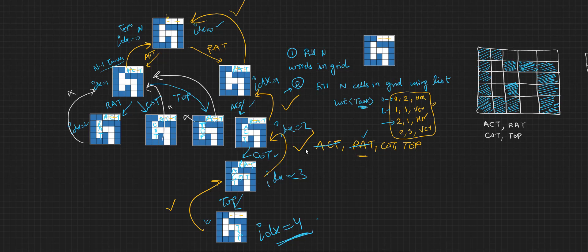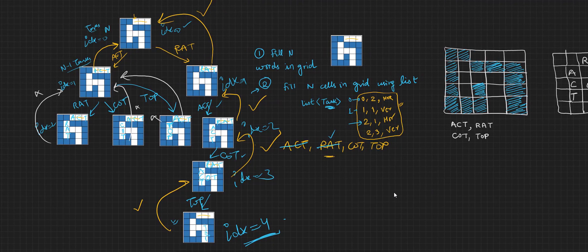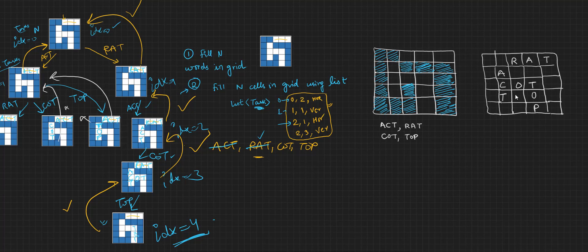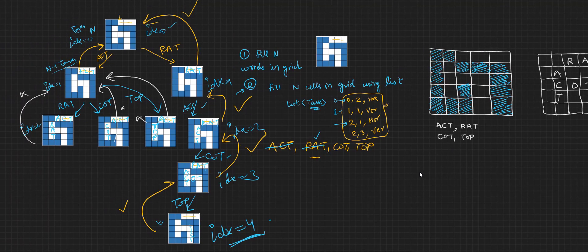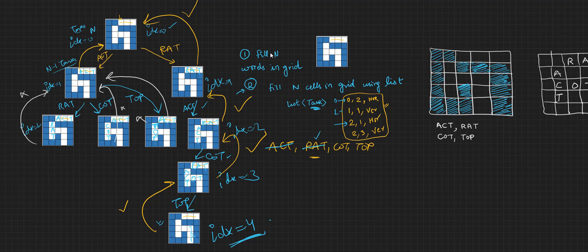The solution grid is filled with RAT, ACT, COT, and TOP. This is the standard backtracking approach. The strategy here was to define tasks as places in the grid. The second approach — treating the word list as the focus and finding the right place for each word — would be covered in a separate video, or you can take it as an exercise to visualize and write yourself.